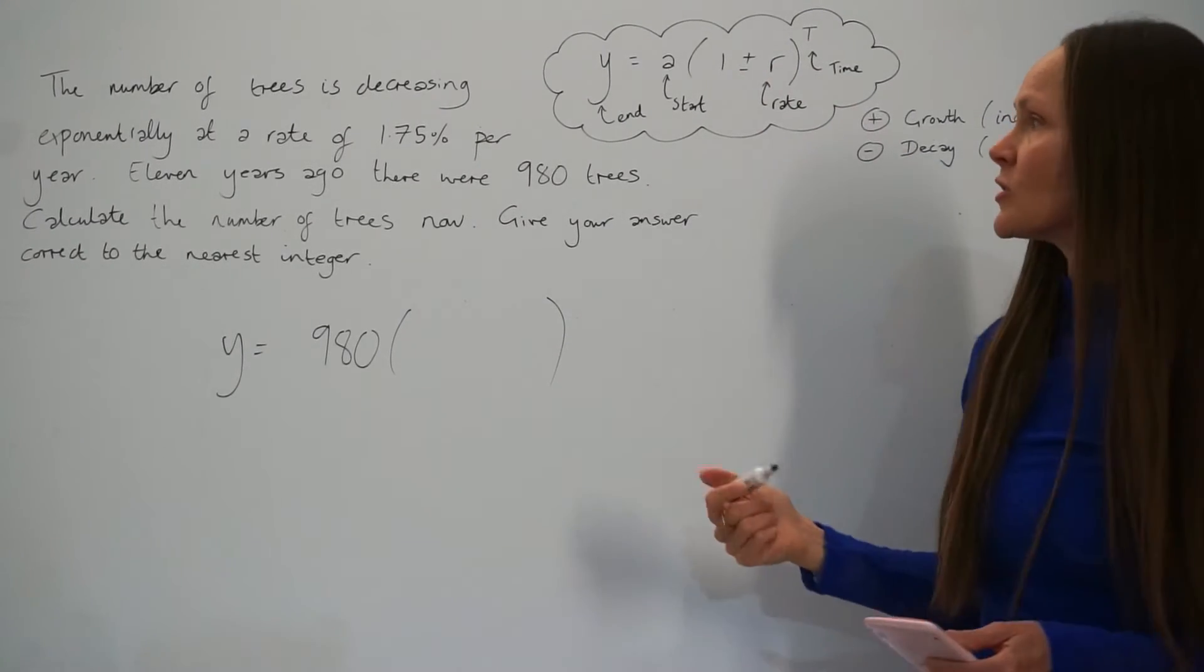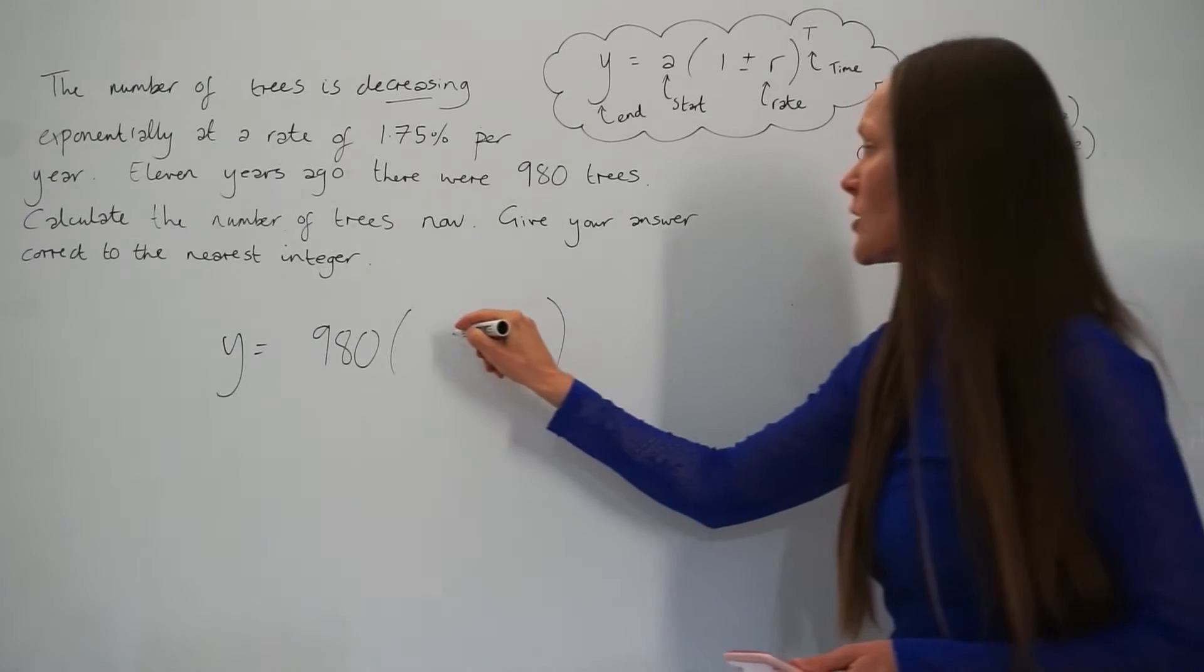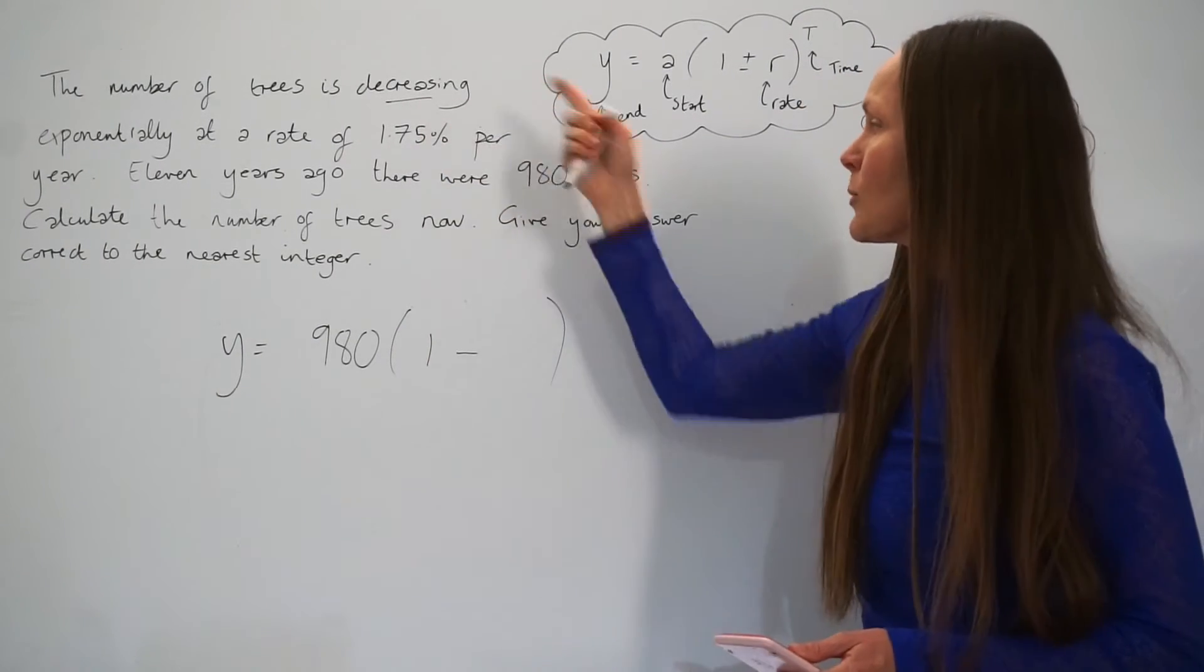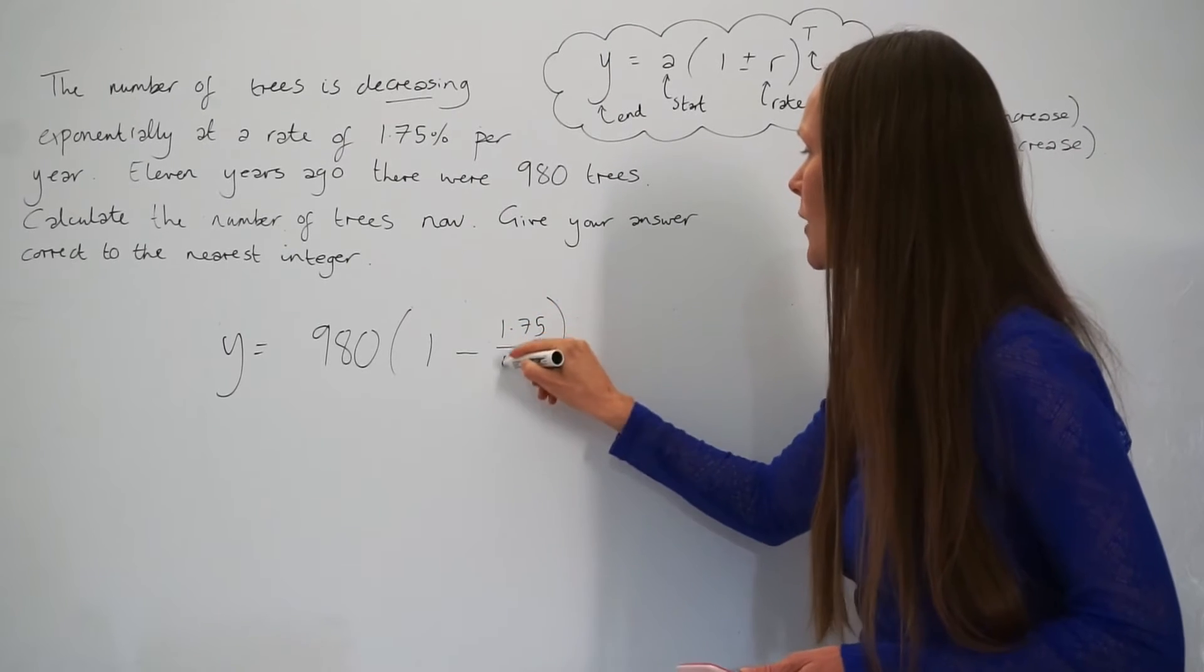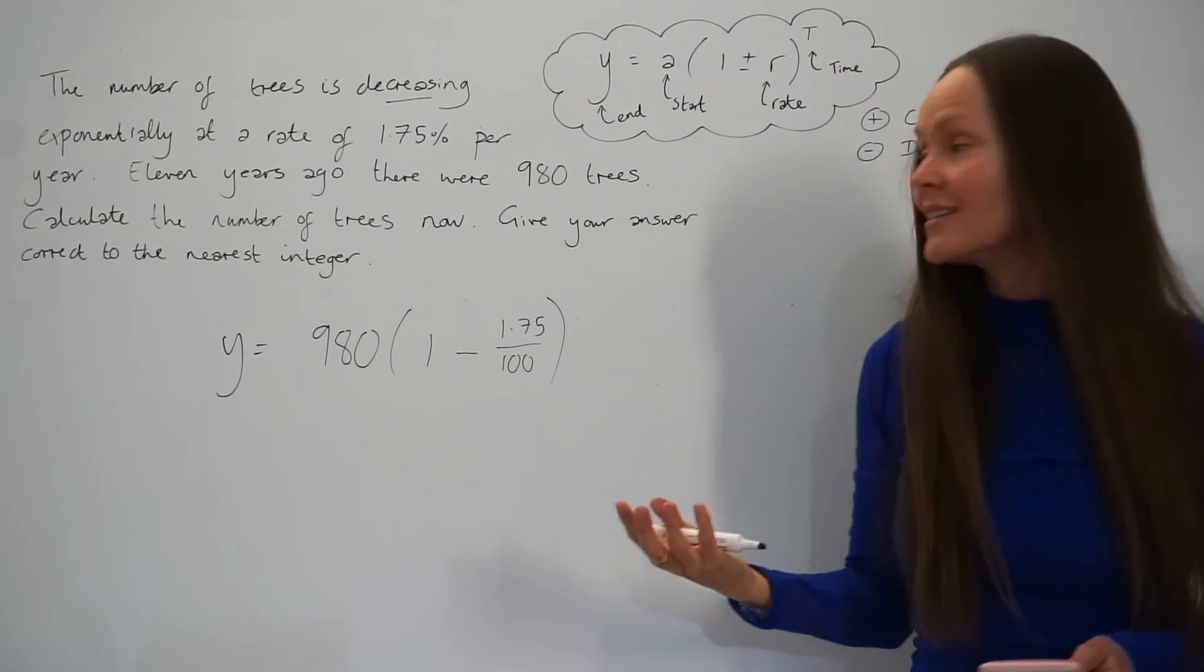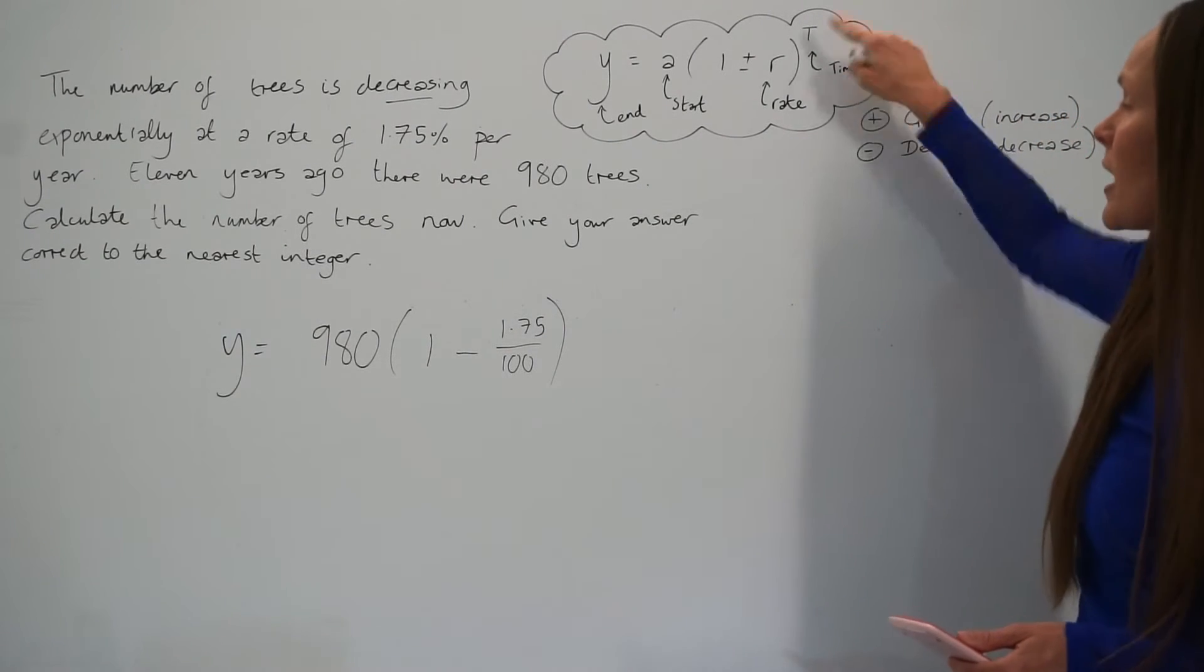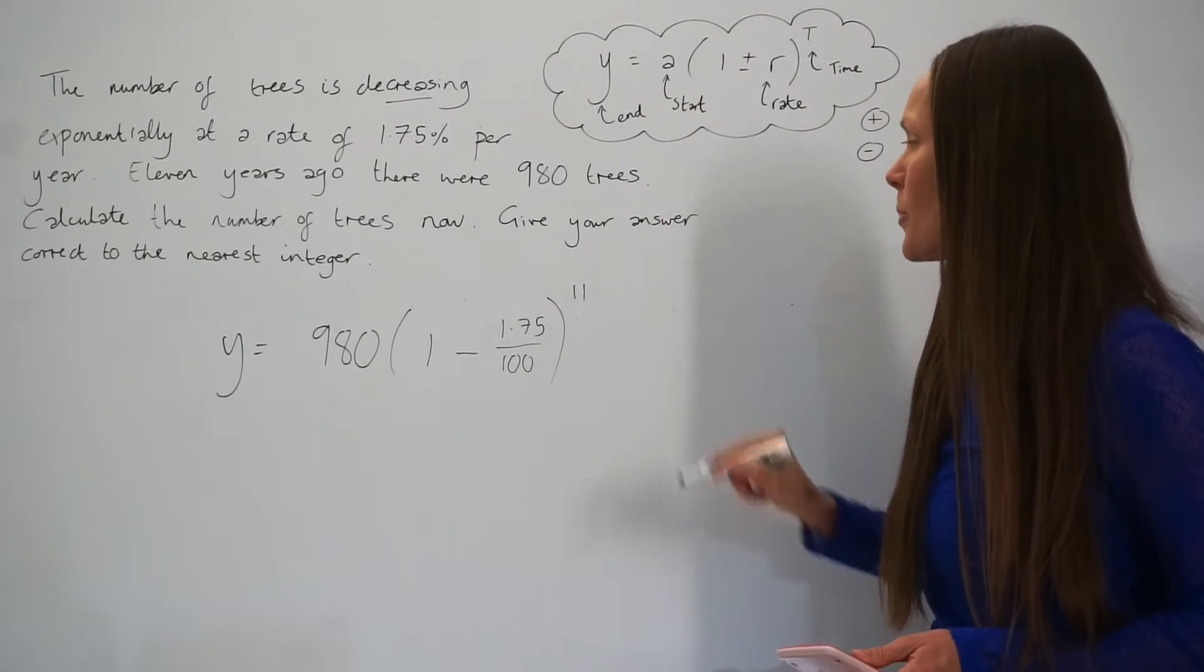Then we have to multiply this number by 1 minus the percentage rate. Minus, because in this question, it's decreasing exponentially. So it's going to be 1 minus 1.75%. So if I write that as a fraction, that's 1.75 over 100. You can write it as 1.75 with the percent symbol if you prefer. It's exactly the same thing. Not forgetting to raise it to time, which is 11 years in this question. So to the power of 11.